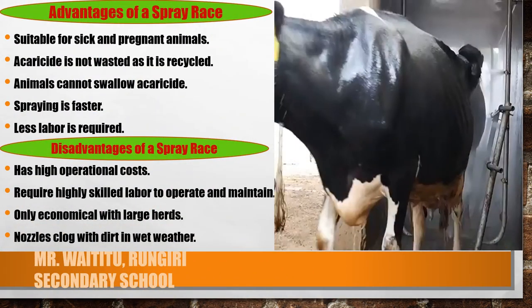What are the advantages of a spray race? First, it is suitable for sick and pregnant animals, as opposed to a plunge dip where you cannot dip pregnant animals. Second, the acaricide is not wasted as it is recycled. Third, animals cannot swallow the acaricide. Fourth, spraying is faster and less labor is required.